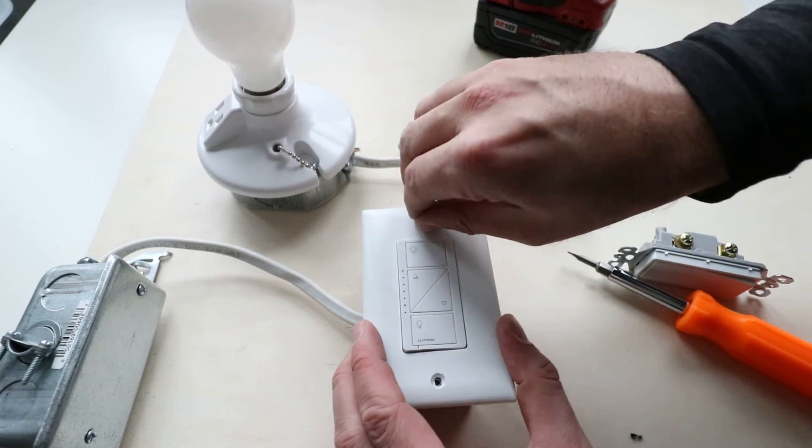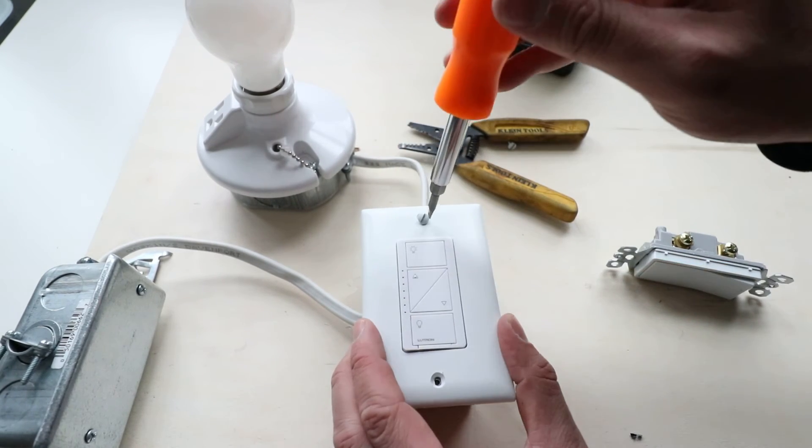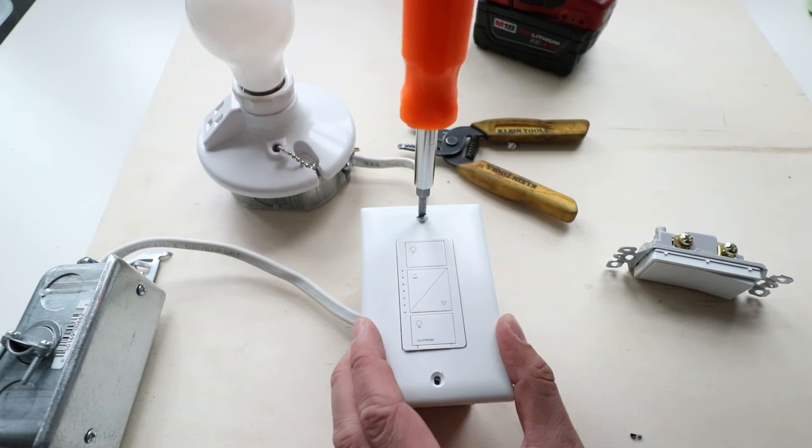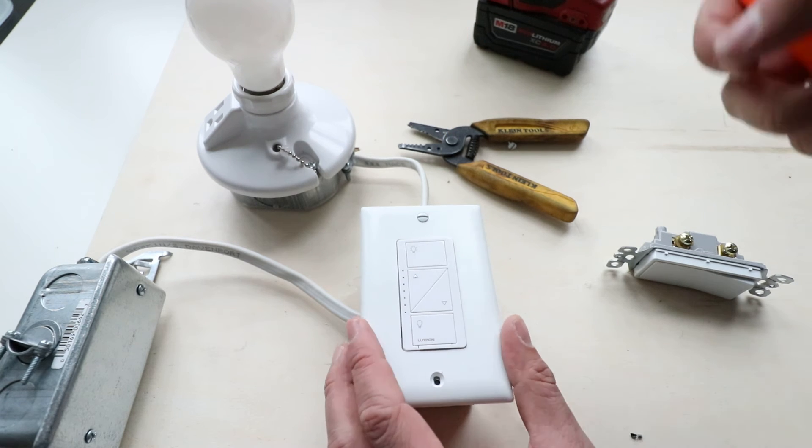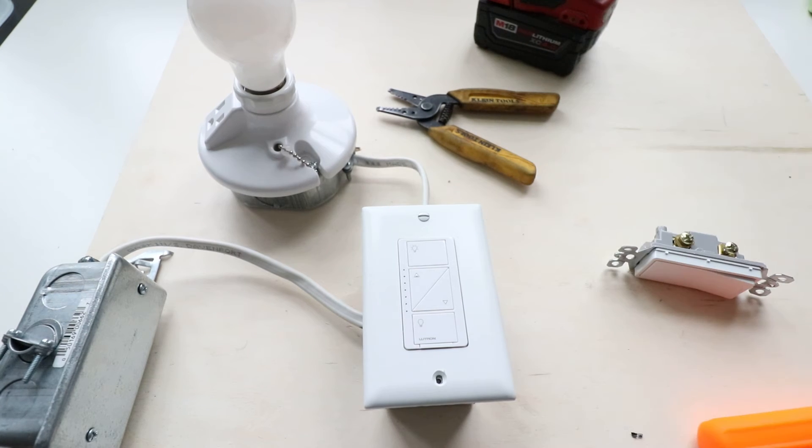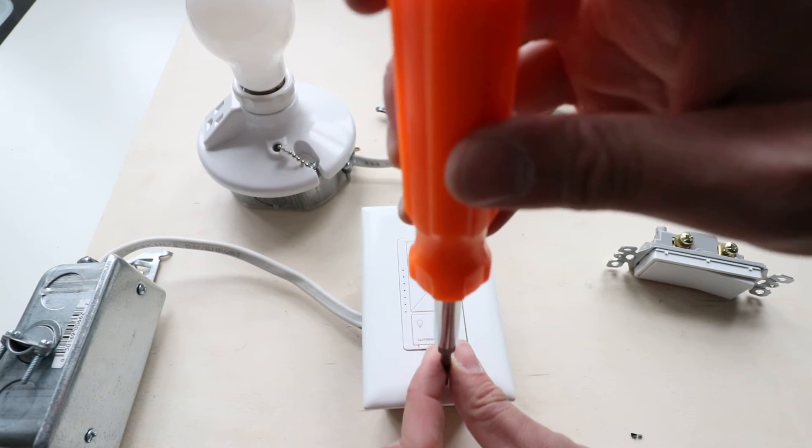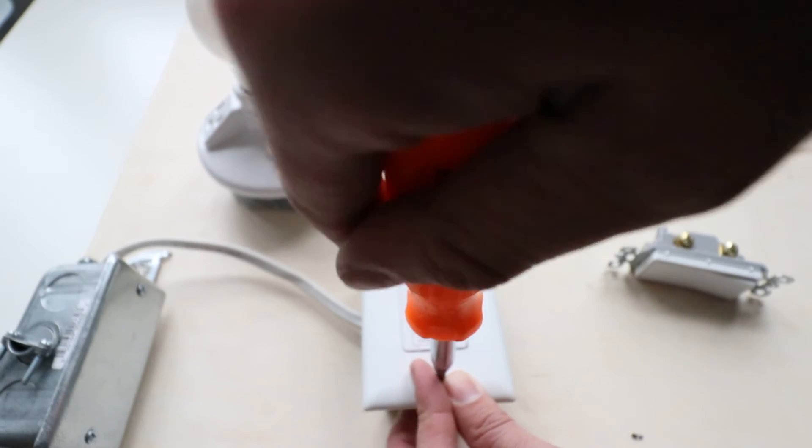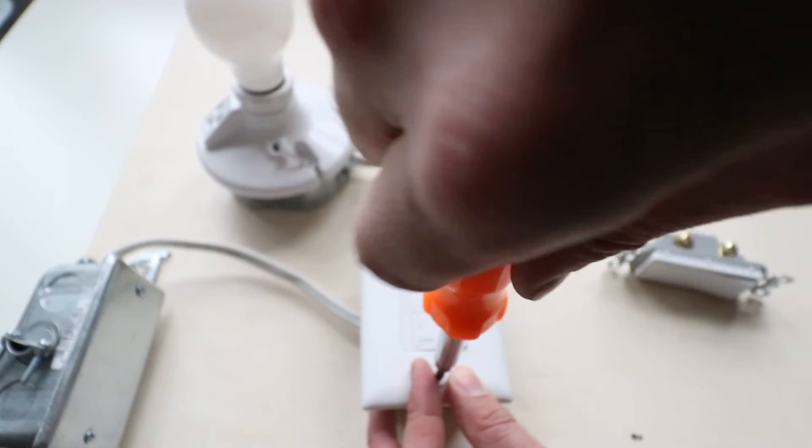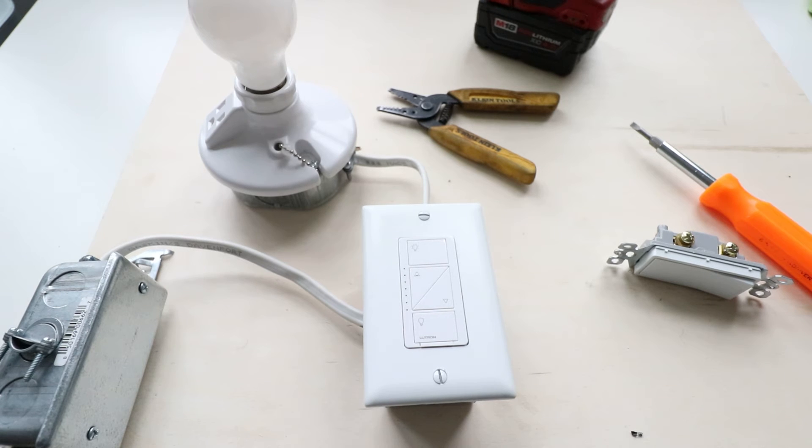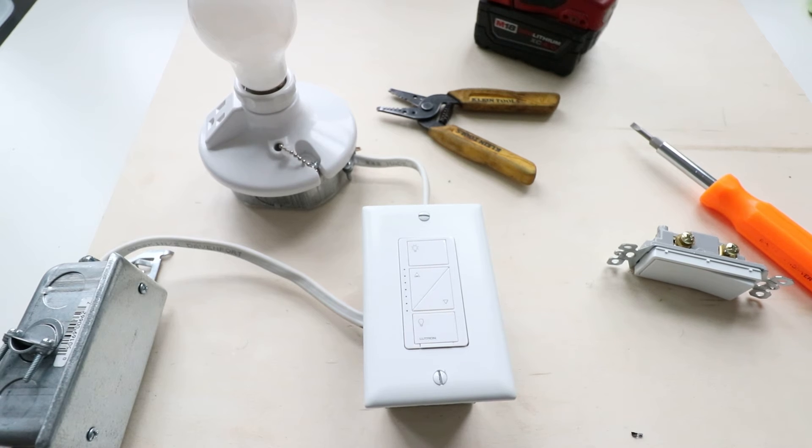Now we're going to put our cover plate back on. Screw in that for the light switch cover plate, and we are all ready to go. Once we get this final screw in, then you would be able to power this up and it would work with your Alexa or your phone to control the light switch. So now I'm going to go turn the power back on and you can see this working and how this smart dimmer will work.